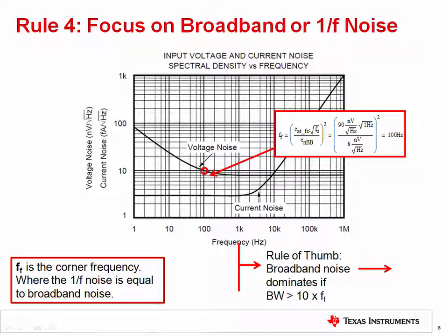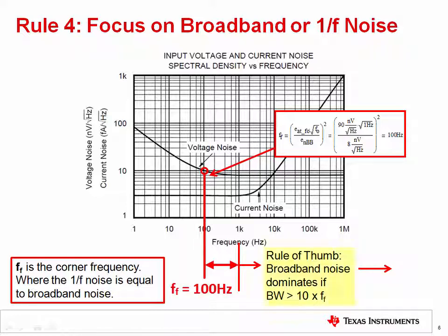Many engineers new to noise analysis focus a lot of time and effort on 0.1 Hz to 10 Hz noise, or 1/f noise. However, the system bandwidth is often wide, and this low frequency noise is insignificant. You should consider the bandwidth of your system relative to the 1/f noise corner of the op amp. The 1/f noise corner is the point at which the 1/f noise equals the broadband noise. This slide shows an equation for the precise calculation of this point, but for the purpose of this rule it is sufficient to graphically estimate the point by looking at the bend in the noise curve. Rule 4 states that the contribution of 1/f noise can be ignored if the system bandwidth is 10 times greater than the 1/f noise corner frequency. For most precision amplifiers, the noise corner is between 1 Hz and 1 kHz. Thus, for systems with bandwidth greater than 10 kHz, you rarely need to consider 1/f noise.